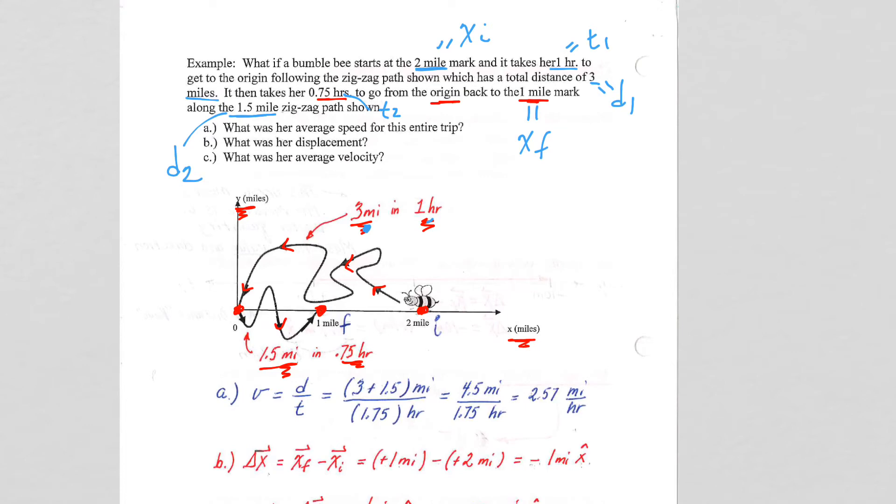So we have average speed equals distance over time. Total distance, d1, 3 plus 1.5, d2. So we get a total distance of 4.5 miles. Total time, t1 plus t2, 1.75 hours. So now you can see we are just lined up and all ready to go to numerically problem solve the problem.